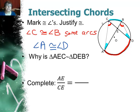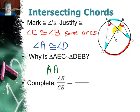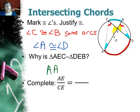Why can we say that triangle AEC is not congruent but similar to triangle DEB? We have angle-angle similarity. We actually have that third angle — the vertical angle — but we only need two angles, because for triangles once you know two, you know the third.